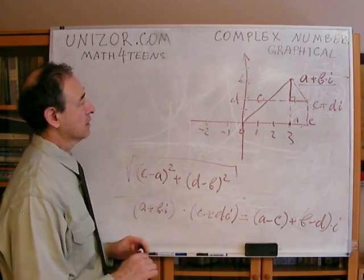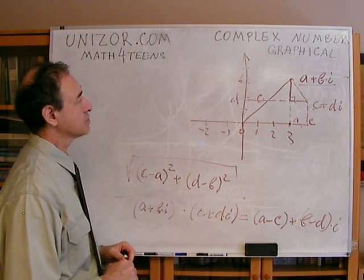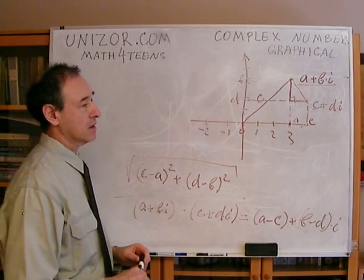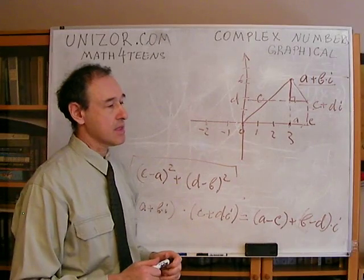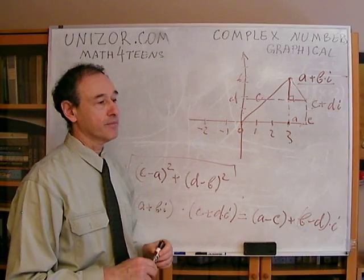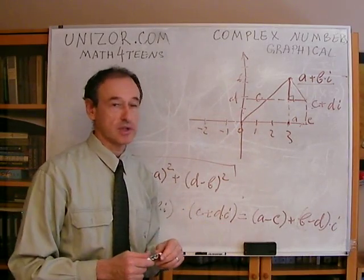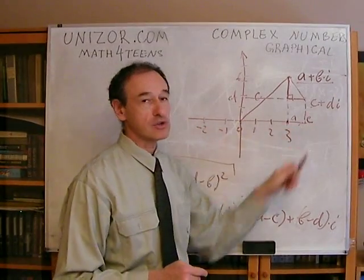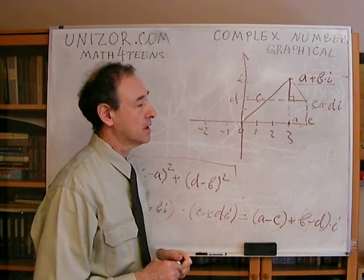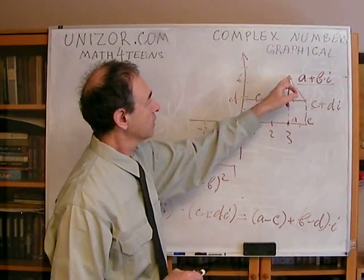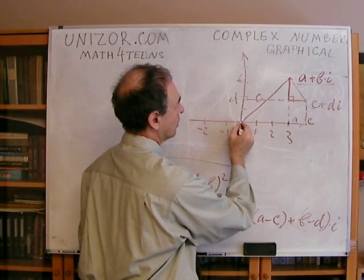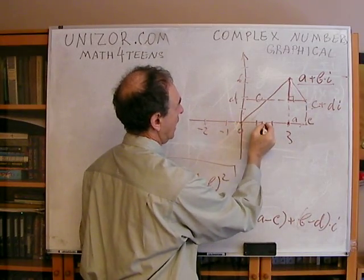The point is that the geometry of complex number representation very much resembles the algebraic operations, with the important property that the distance between two graphical representations is the modulus of their algebraic difference. What's interesting is that you can also represent a point on the plane using polar coordinates — not necessarily Cartesian — where every point is described by its distance r from the origin and an angle alpha.